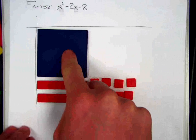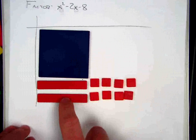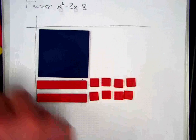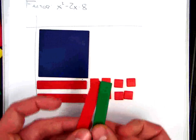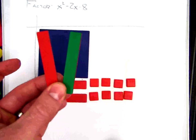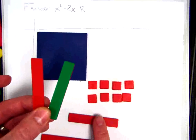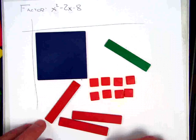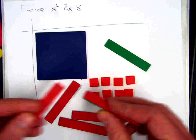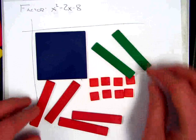I know that if my product is x squared minus 2x minus 8, I can add a zero pair, or in other words, one positive and one negative tile, and I will not change the value of my product. So I can add a positive and negative, and I can add a positive and a negative.